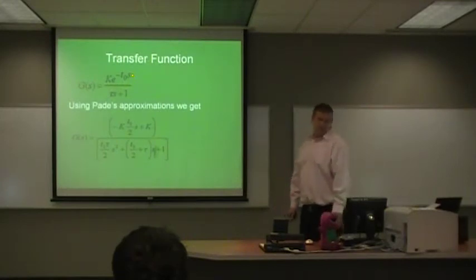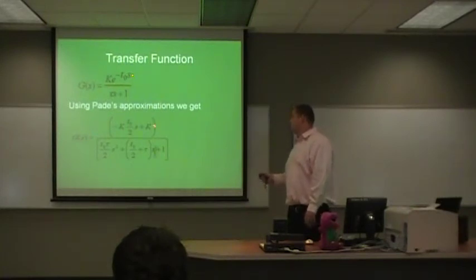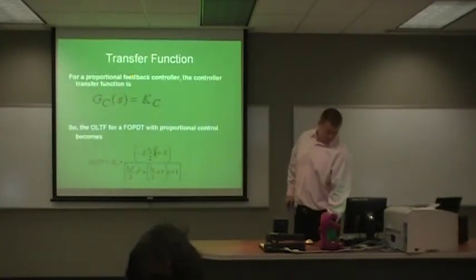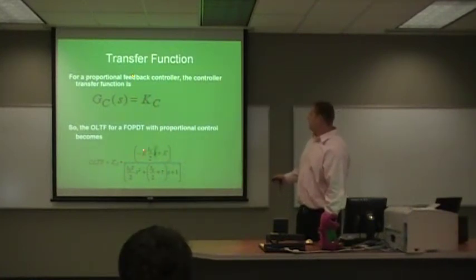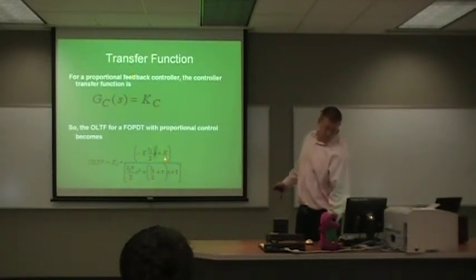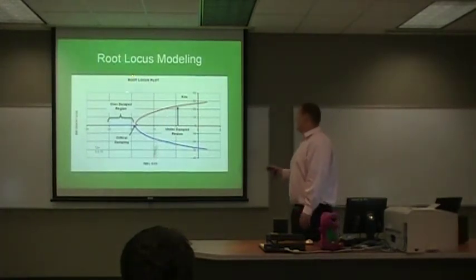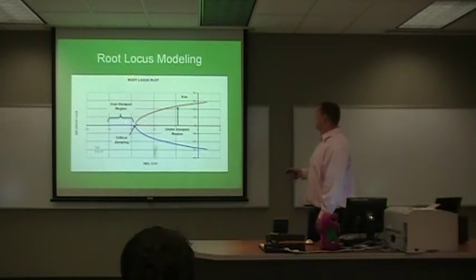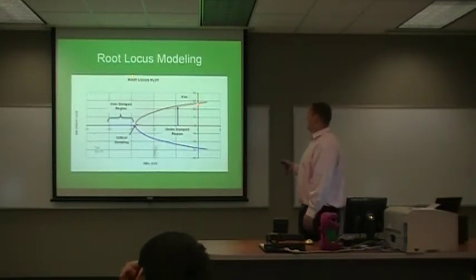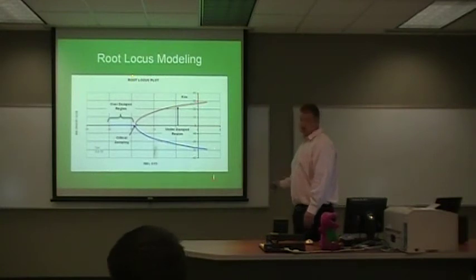This is the transfer function used for the system and using Padé approximation, you get this right here. And then this is the transfer function again for the proportional control for the root locus model. Here's an overview of what a root locus model looks like. This region right here is your overdamped region. This is where the critical damping point occurs. This region all right through here is your underdamped region, and then right here the crossing of the axis is the KCU.